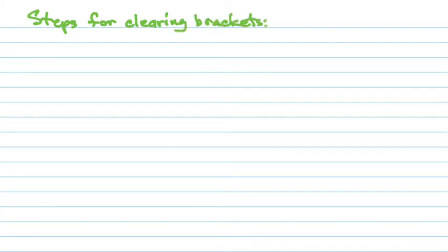We're going to look at some steps for clearing brackets. Remember the order of operations — brackets need to be done first. The first step is to look inside the bracket. The second thing to look for is an exponent on the bracket itself — that won't come up in this course but will be important later. The third and last thing, which is also most common, is the multiplier or coefficient.